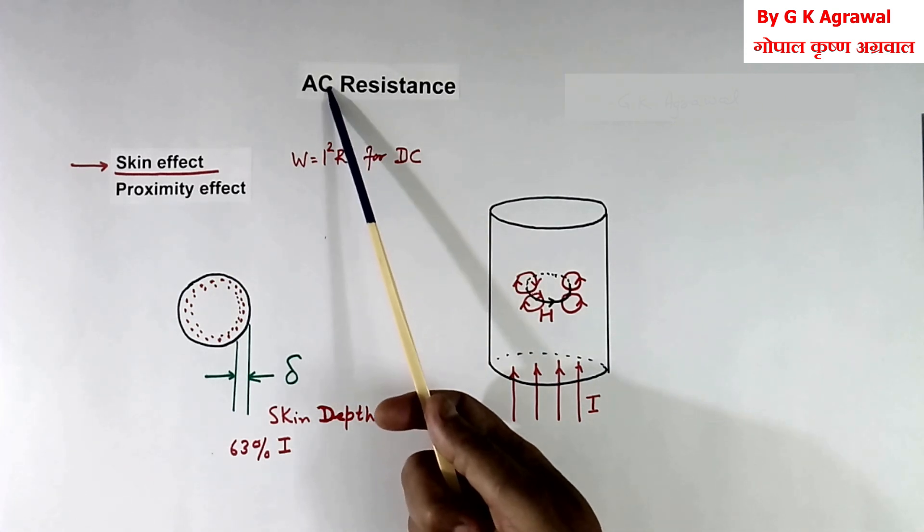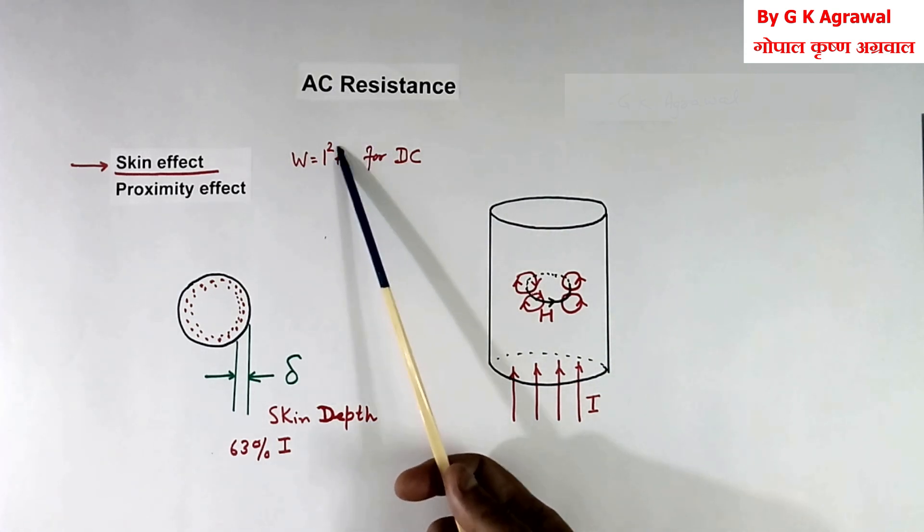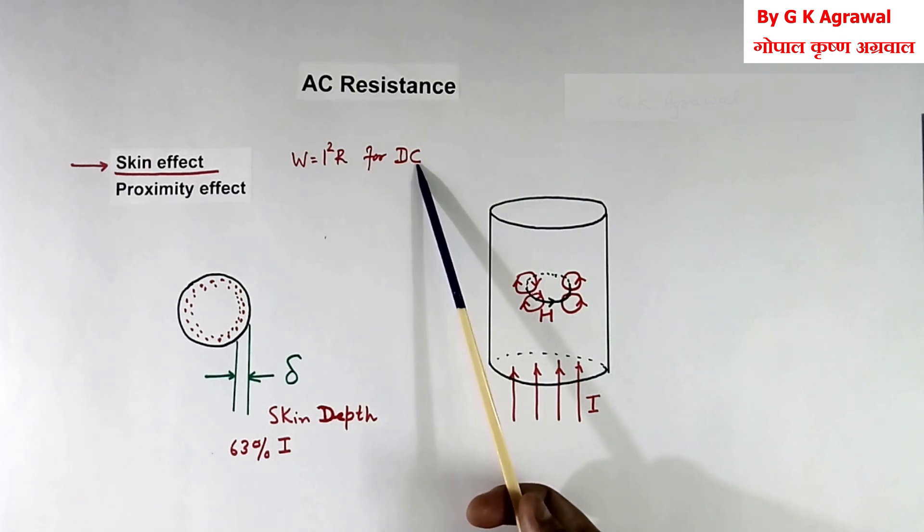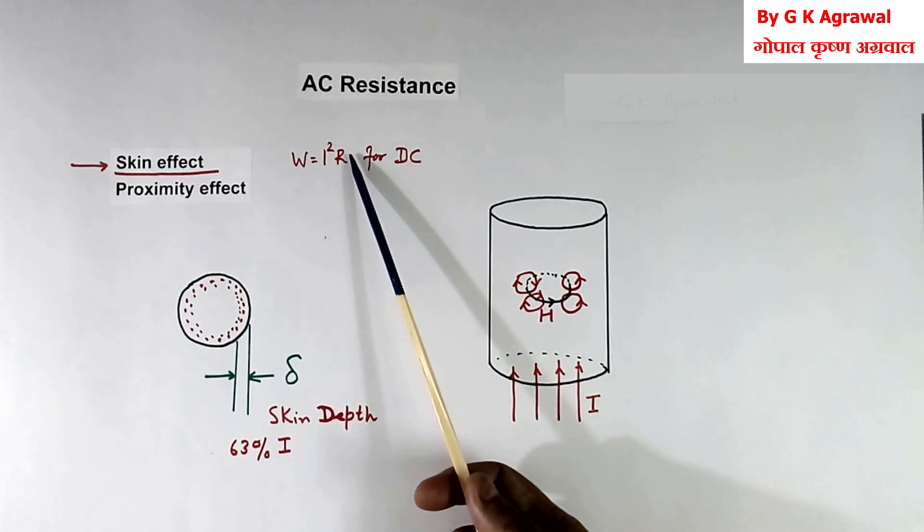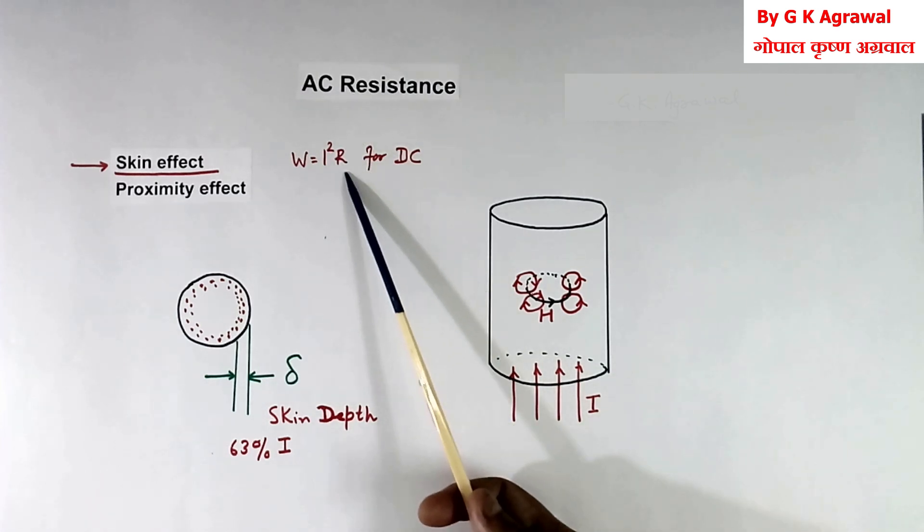In case of AC, resistance of wire will be more than DC resistance. And higher the frequency of AC, higher the resistance value will be.